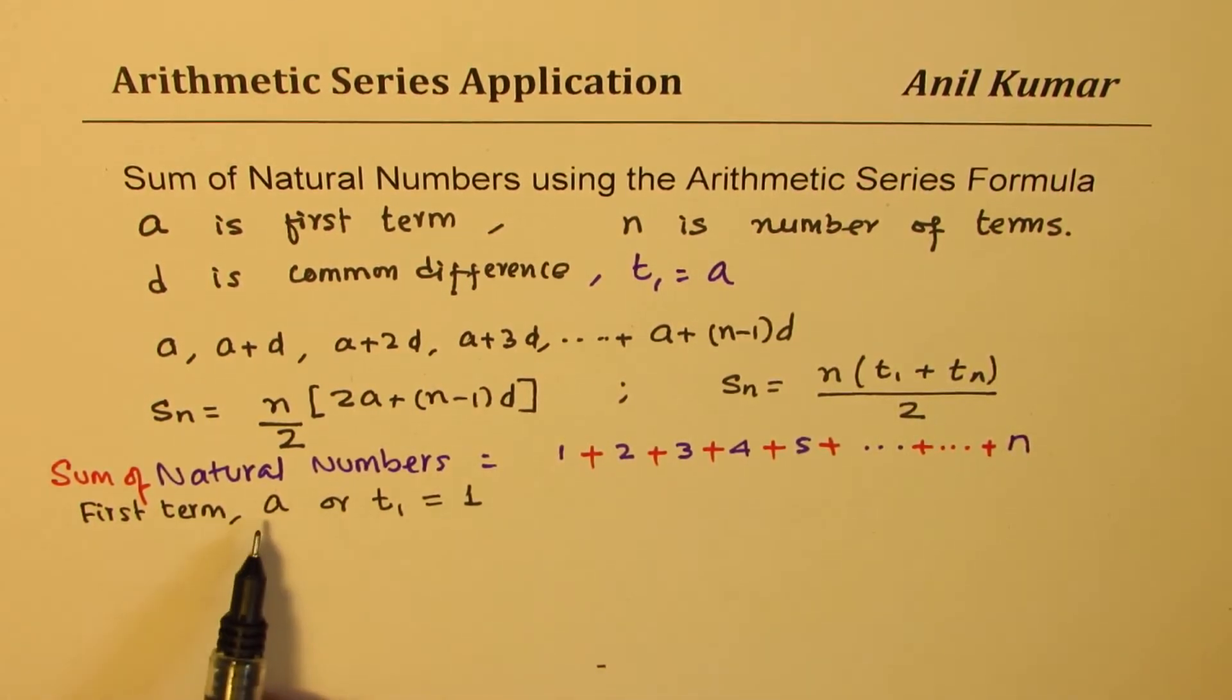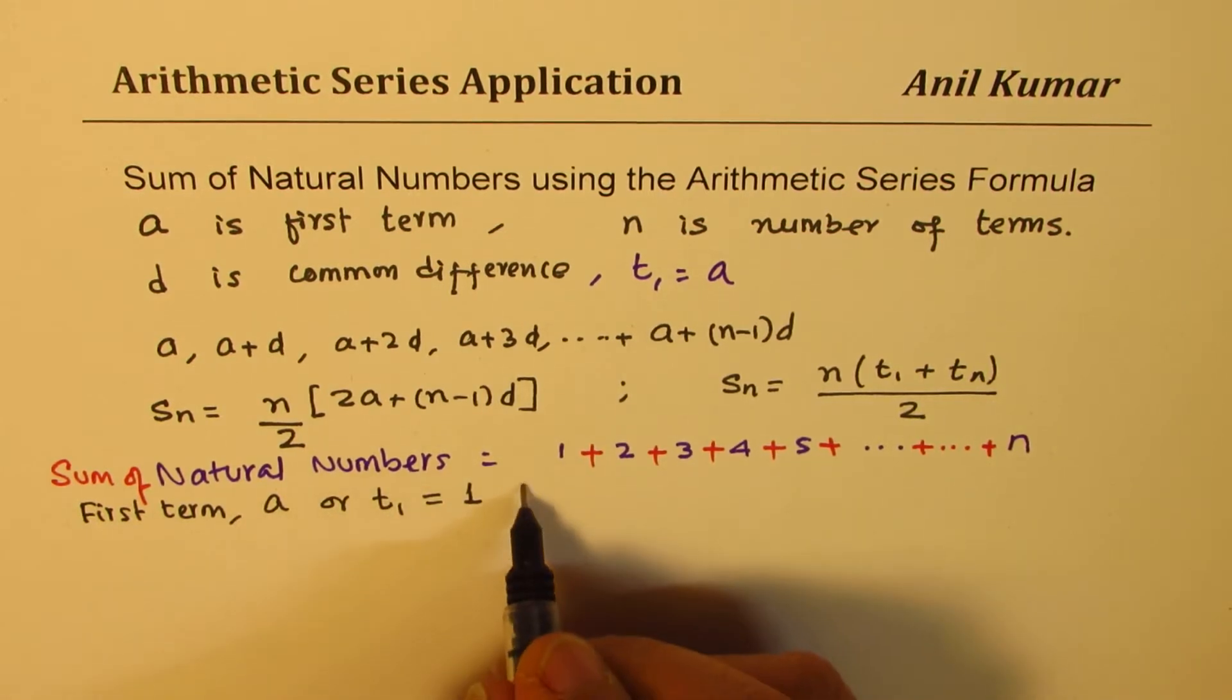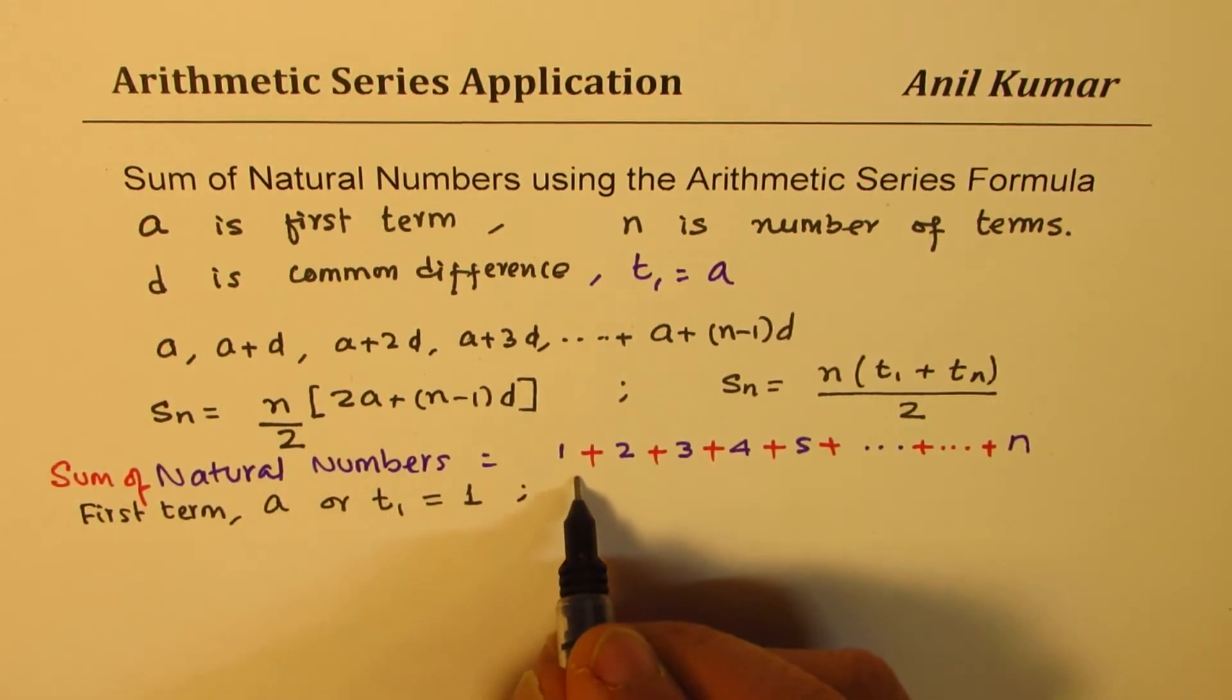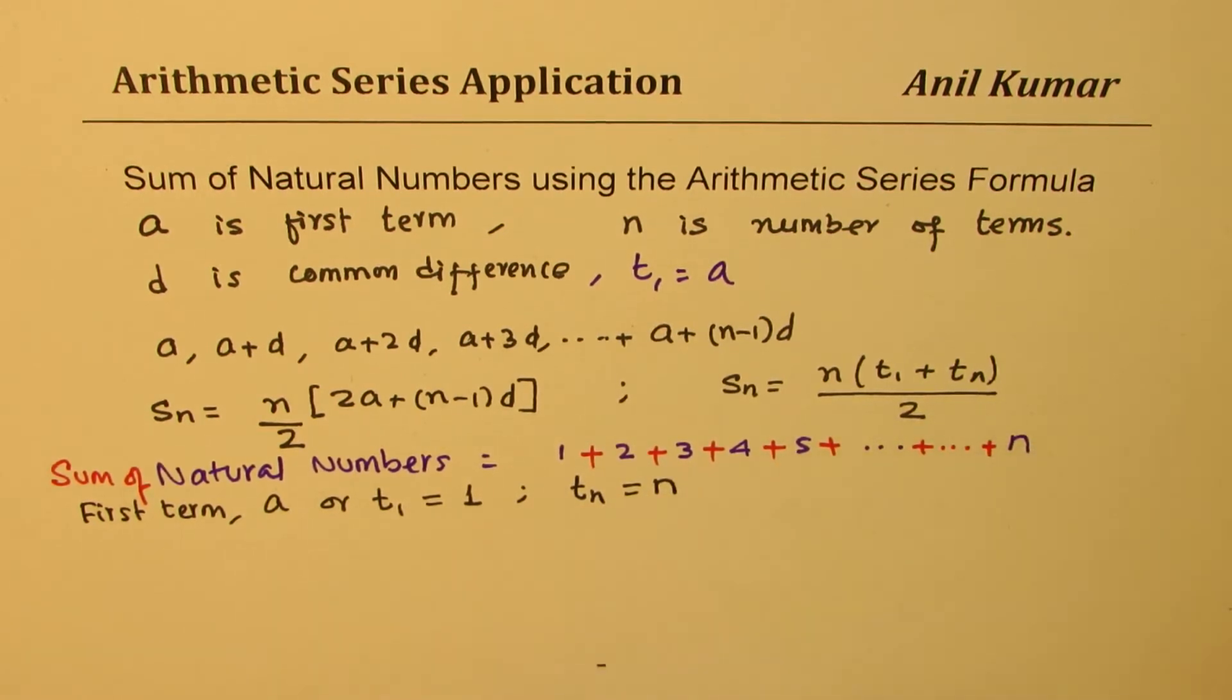So in this case, first term A or T1 is 1. And the nth term, Tn, is actually n. So n is also the nth term. Now knowing that, what we can do here is that we can use the sum formula and get a general formula.